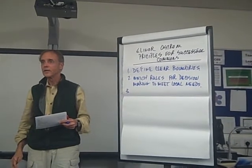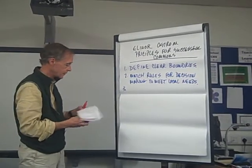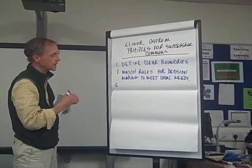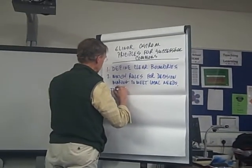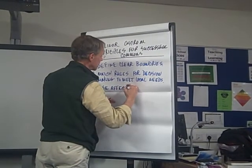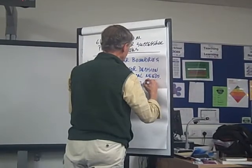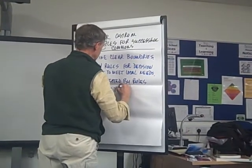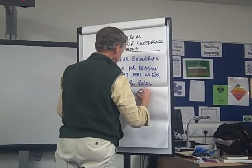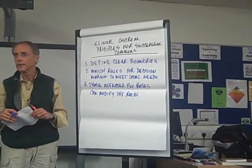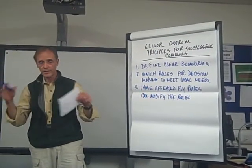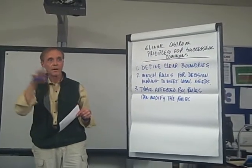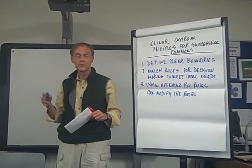Ostrom also says we need to ensure that those who are affected by the rules can participate in modifying the rules. For example, if we're on a forest council in Nepal responsible for overseeing management of a forest, we can determine how much wood we can take out and modify rules as conditions change.